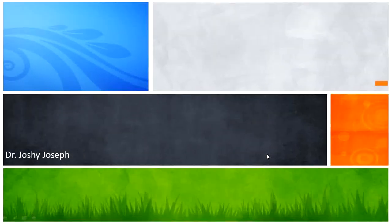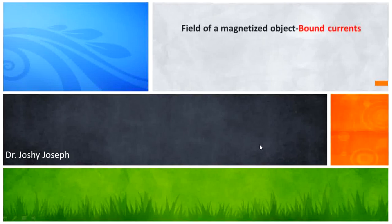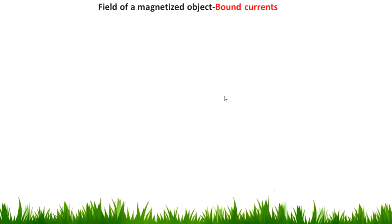Welcome students. Welcome to the class. Today we are going to discuss the field of a magnetized object that has bound current. We have already discussed the topic of bound charges, that was in last semester. Today it is time to discuss what is a bound current.